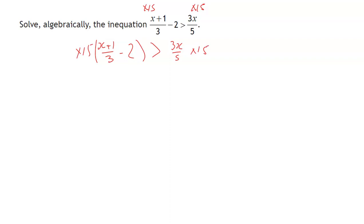So the left side, I'm going to multiply each term by 15. So the x plus 1 over 3, if I multiply that by 15, that's the equivalent of me just multiplying the x plus 1 by 5, because I'm essentially going to have 15 divided by 3, which will give me 5. And then I'm going to take away 2 times 15, because I've got to multiply that part of the bracket as well by it.